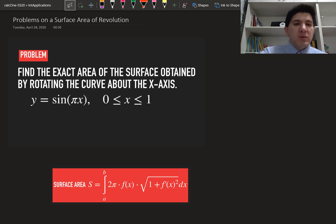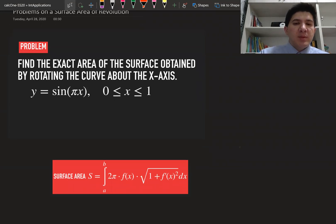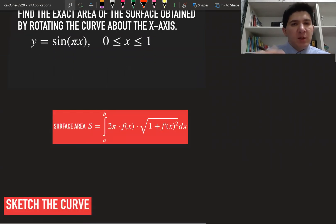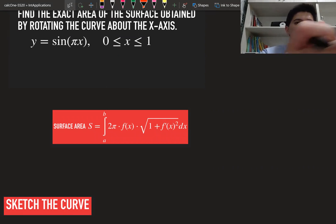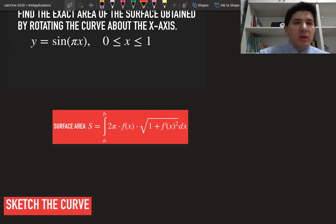We are going to rotate this curve around an x-axis, and we are going to use the following formula in order to find the surface area. Before we proceed with the calculations, I would like to sketch this curve and sketch the object, and try to understand and imagine what kind of surface area we are going to find.